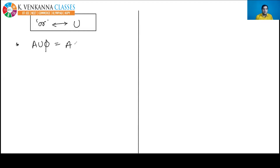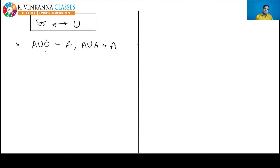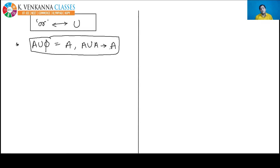Next: A union A. Definitely you will get A, because combining all elements of A with the elements of A gives you elements of A. So these two results you must understand — they will be used later when we solve questions.